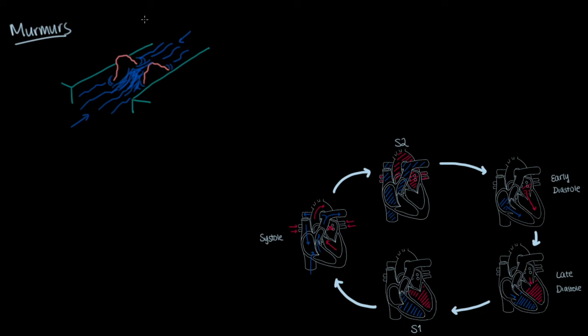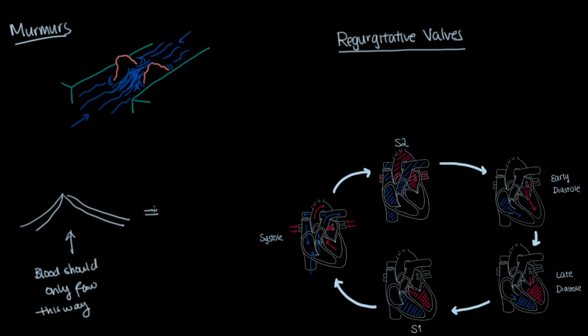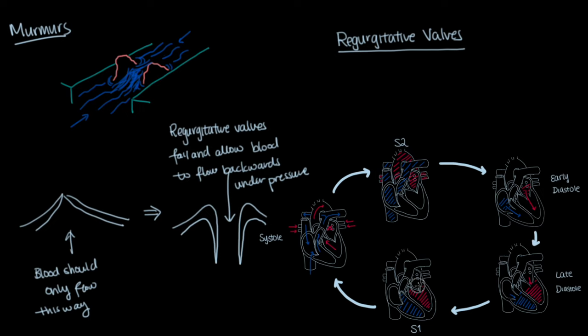The imagery of the stream merging with another stream flowing in the opposite direction represents regurgitative valves, which are valves that have lost their ability to function as one-way valves and stop the blood from going in the wrong direction. In examples like mitral regurgitation, the left ventricle contracts, but the mitral valve fails and allows blood to go into the wrong direction into the left atrium, which causes turbulence.